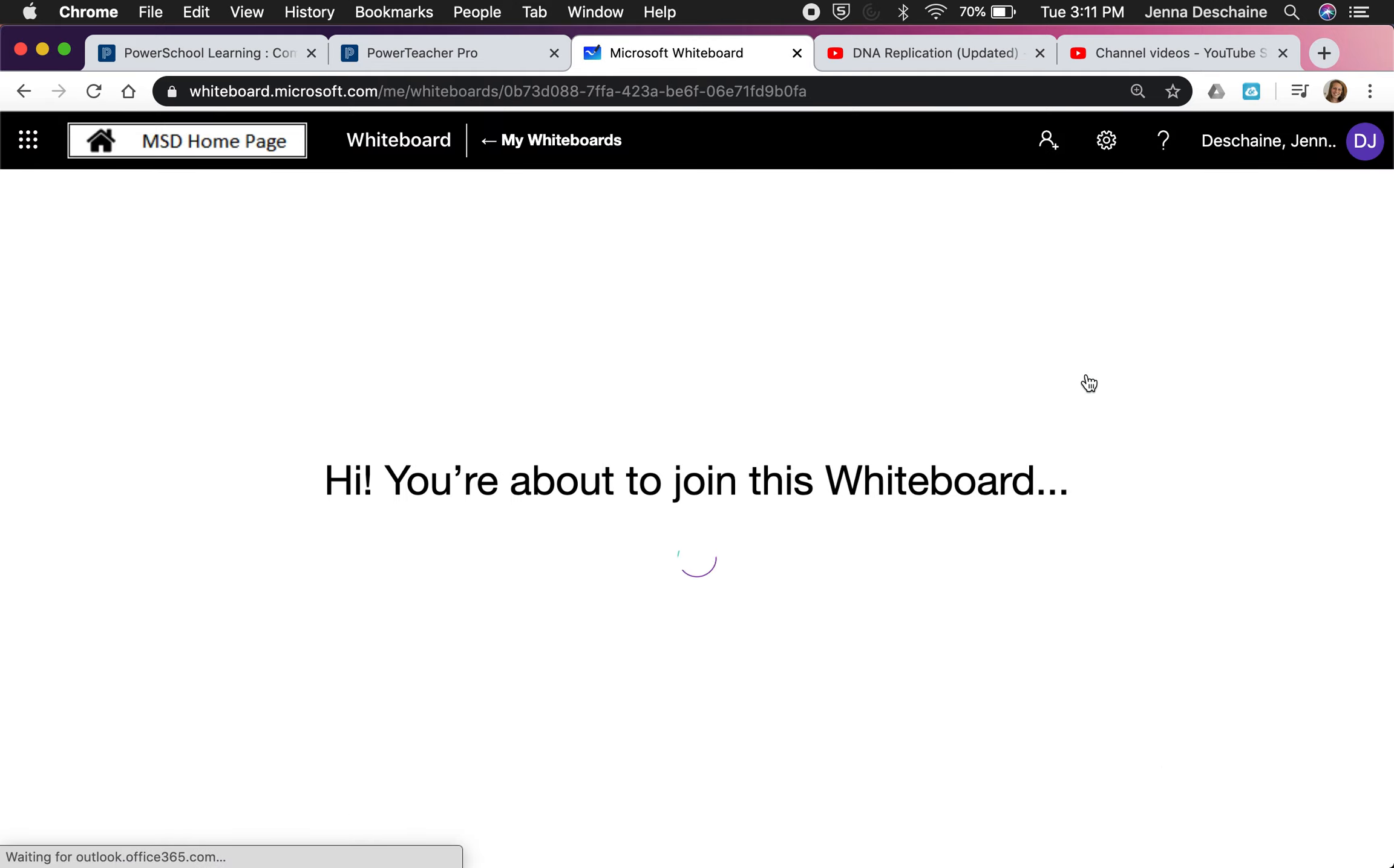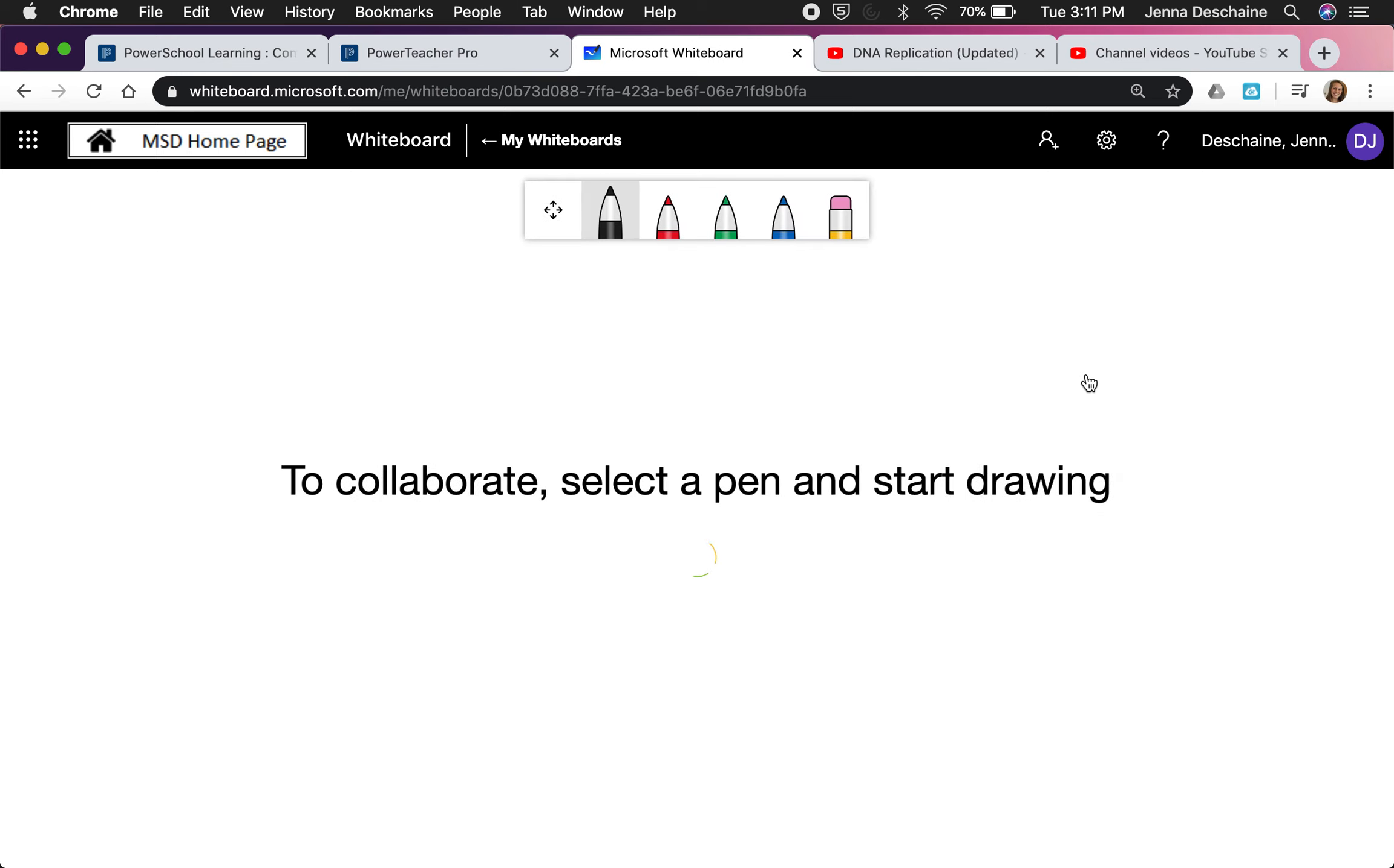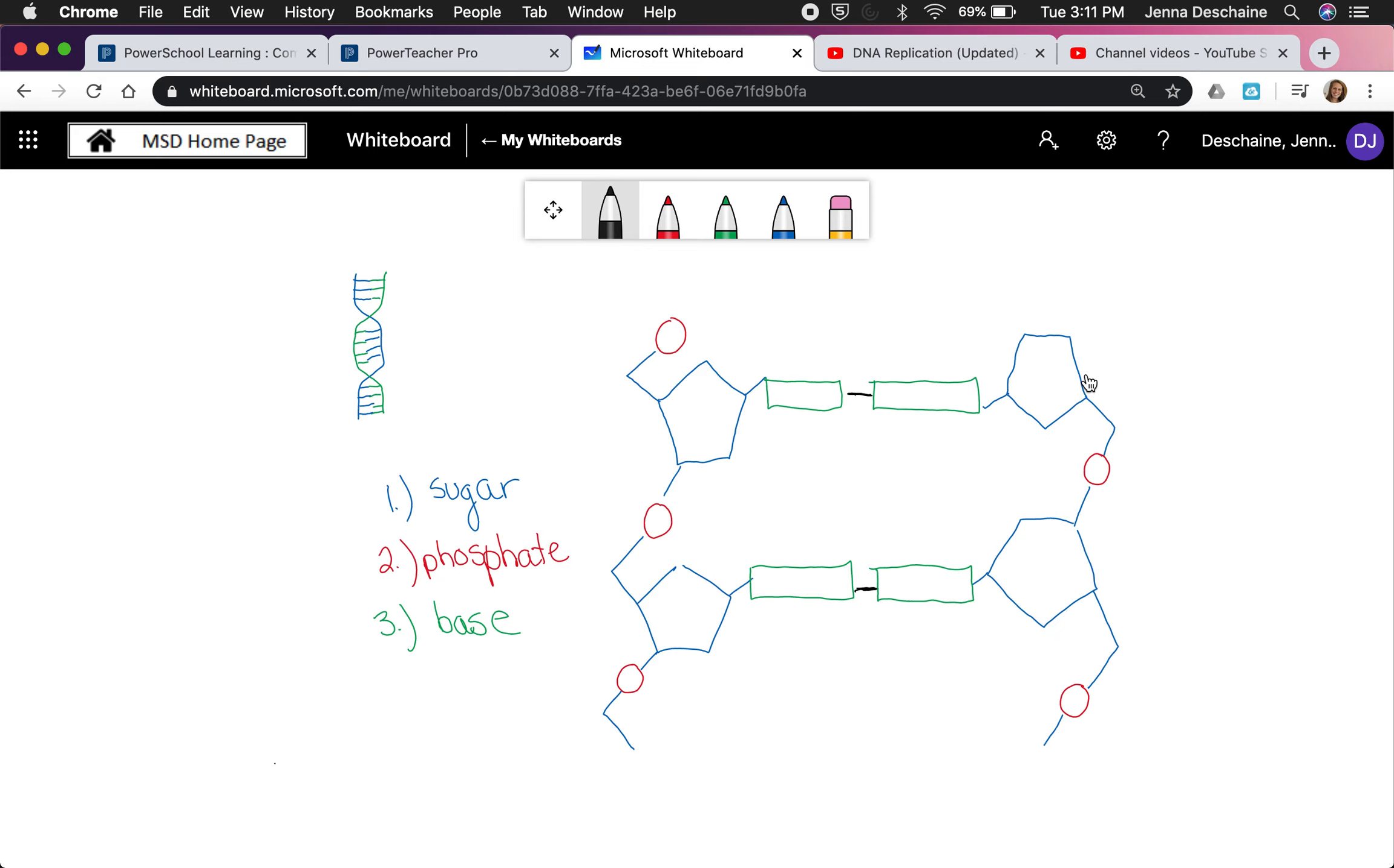Sometimes this takes a while. Here we go. So this is the DNA molecule that I was talking about on the previous page. If you've noticed, I've actually done a better job showing that there's a blue strand right here in the DNA and there's a green strand right here, and those strands combine together at the center.